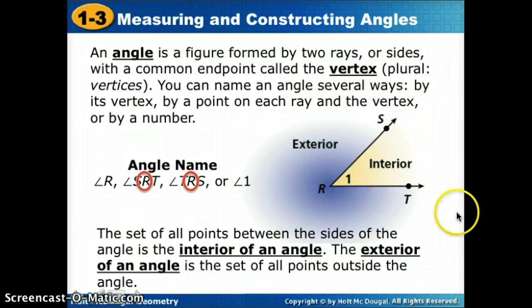When we look at an angle, there are two regions. The set of all points between the sides of the angle is the interior of an angle. The exterior of an angle is the set of all points outside the angle.